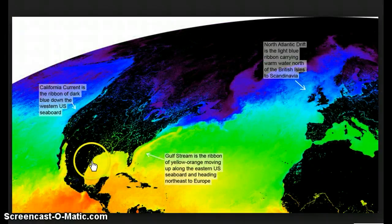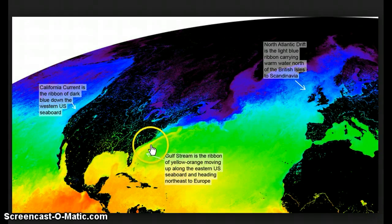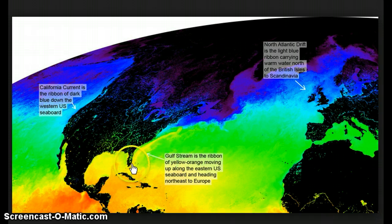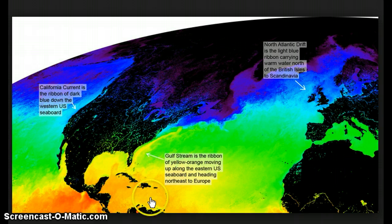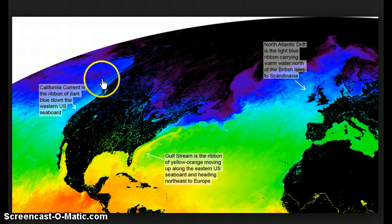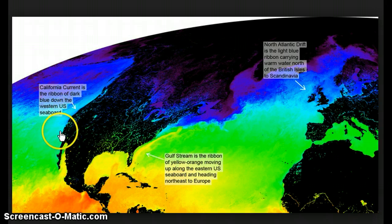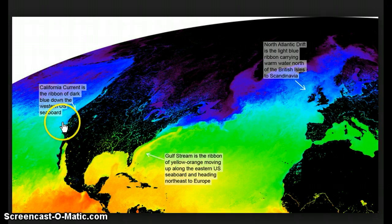we can see that the east coast here is on a warm ocean current. You can see this band of kind of yellowish-orange coming up from down by the equator. Whereas the west coast is on a cold current — it's blue coming down from the poles.